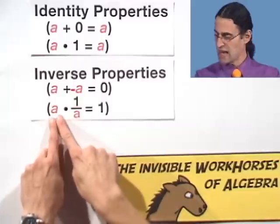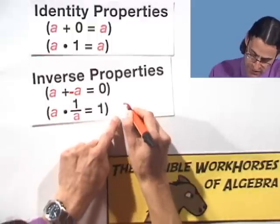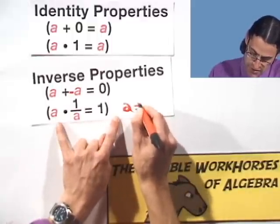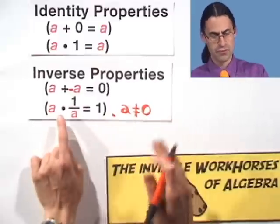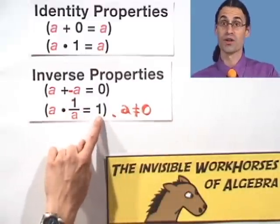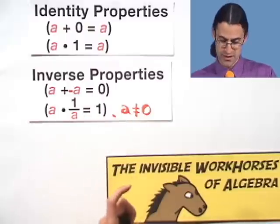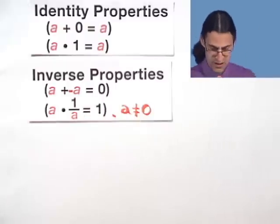Similarly, if we take an a, and here it's very important that a is not zero. We've already talked about the fact that a can't be zero because we can't divide by zero. Then if we multiply it by the reciprocal one over a, then we get one, which I remind you is the multiplicative identity.